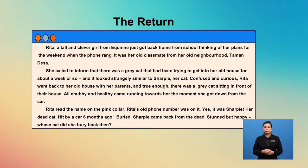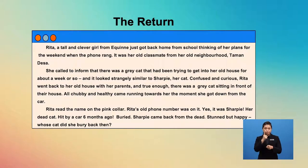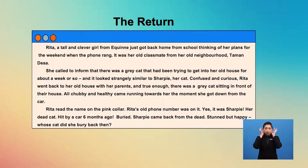She called to inform that there was a grey cat that had been trying to get into her old house for about a week or so, and it looked strangely similar to Sharpie, her cat. Confused and curious, Rita went back to her old house with her parents, and true enough, there was a grey cat sitting in front of their house — all chubby and healthy — came running towards her the moment she got down from the car. Rita read the name on the pink collar; Rita's old phone number was on it. Yes, it was Sharpie, her dead cat, hit by a car six months ago. Buried! Sharpie came back from the dead. Stunned, but happy. Whose cat did she bury back then?